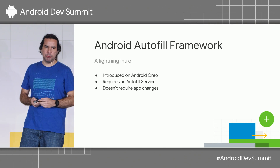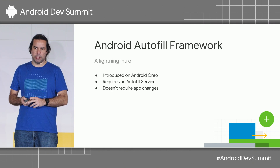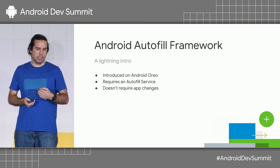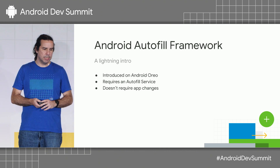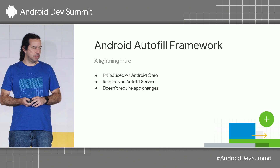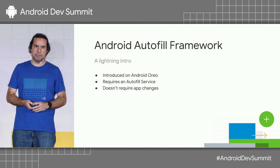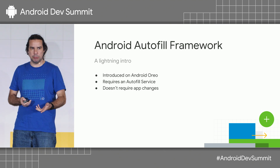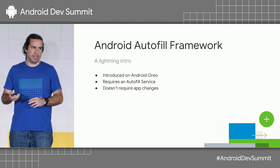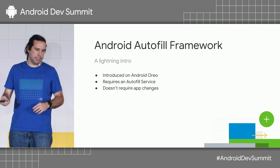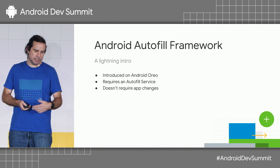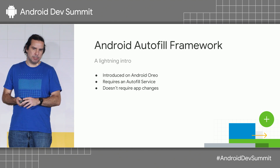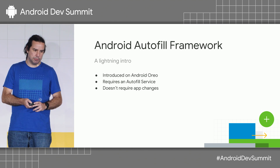The Android Autofill Framework is a new feature that we introduced last year on Android, and the goal is to provide a safe and fast way for a password manager to do their job. To use Autofill, you need to select an Autofill service, which could be a service provided by the OEM, like Google Autofill or Samsung Pass, or you can install third-party apps like LastPass, Dashlane, 1Password, and many others. Last time I checked, there are about 30 different apps on the Play Store that provide an Autofill service.